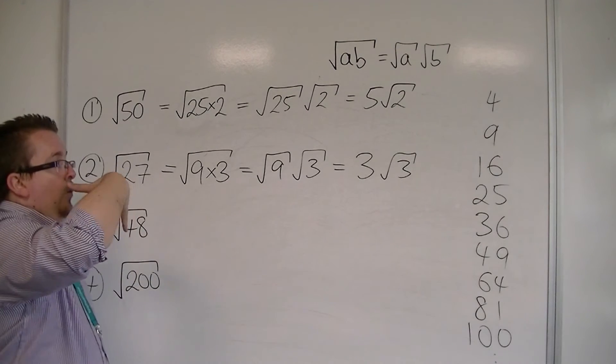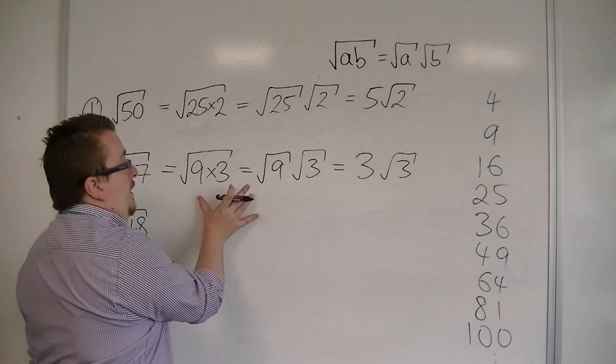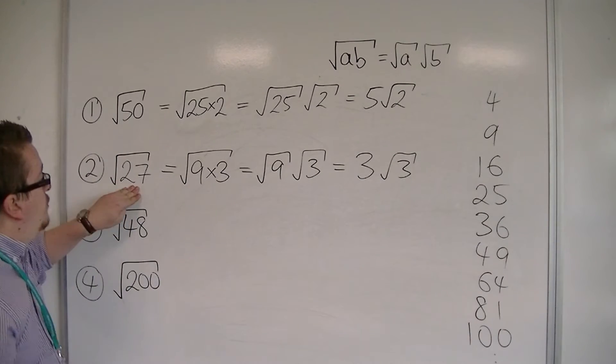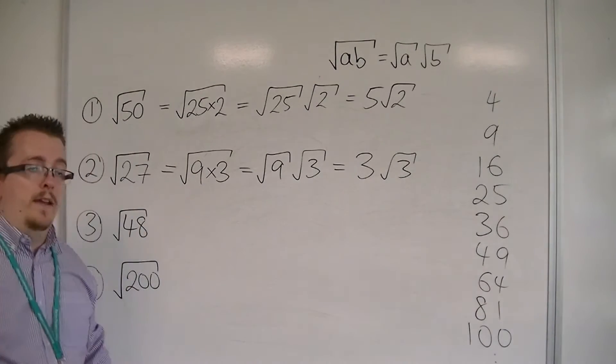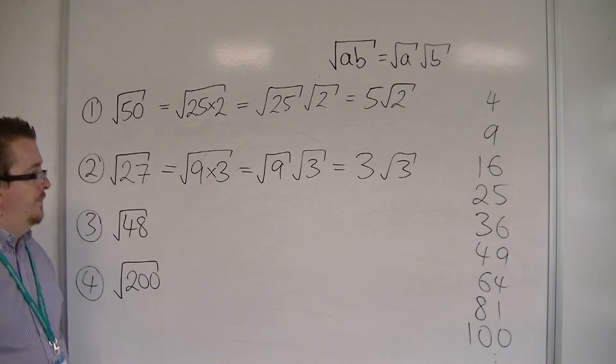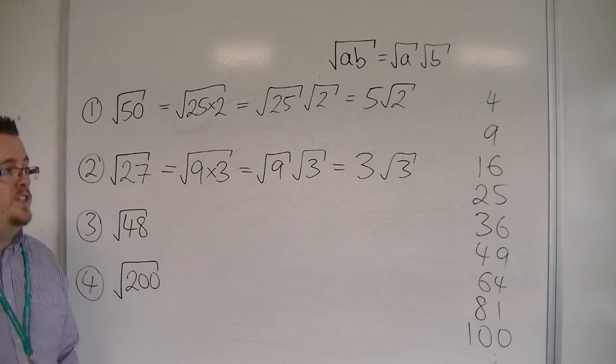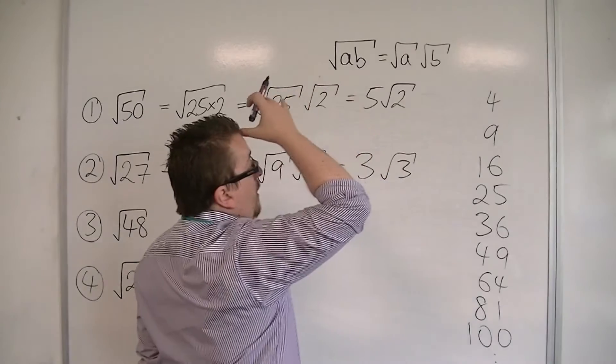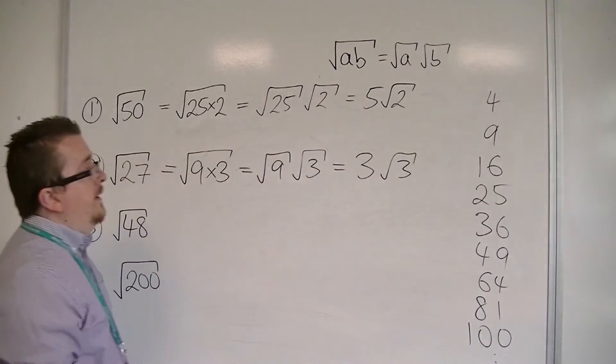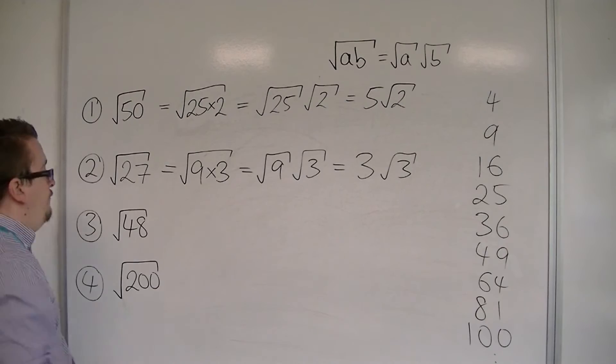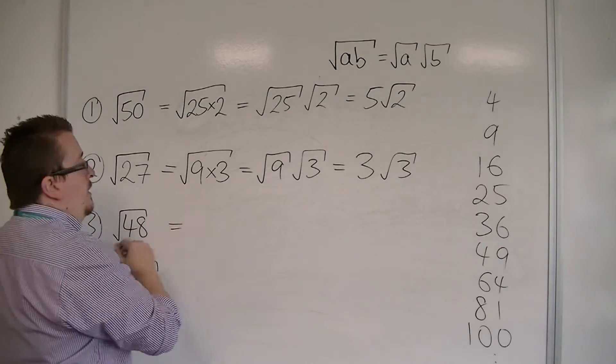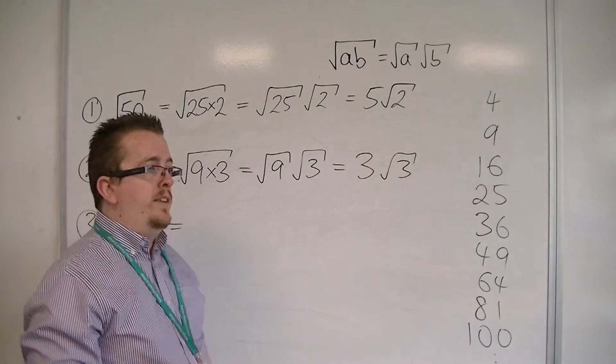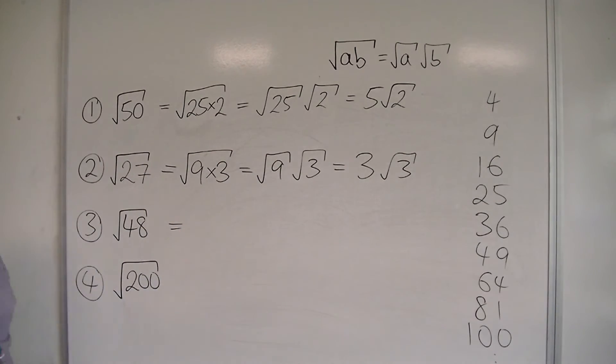And when you get more confident with these, it's likely that you start to lose these intermediate steps, and you can start to think of root 27 straight as 3 root 3, as you build in confidence. Let's go for this next one, root 48. Now, square root 48, I can look down this list, and I might go, well, I know that 4 goes into it, so I could go with 4. Or you could think to yourself, well actually, looking down this list, I know that 16 could go into it 3 times. So that would save me a little bit of bother.